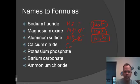Calcium nitride: calcium is 2 plus, nitrogen is 3 minus. So we would have Ca3N2.